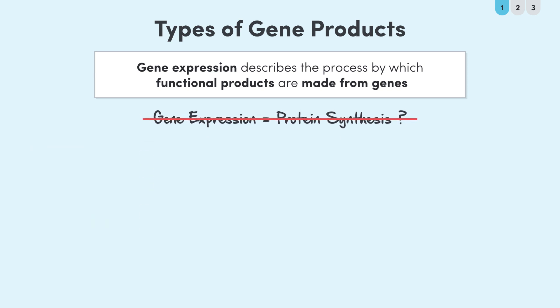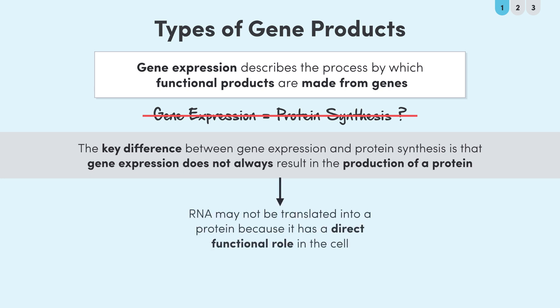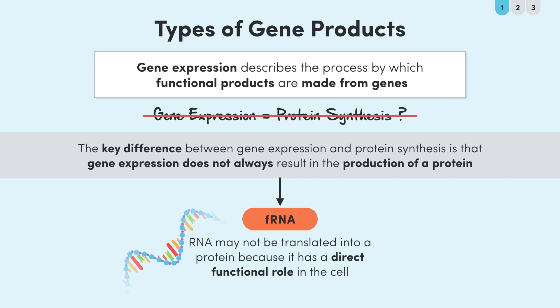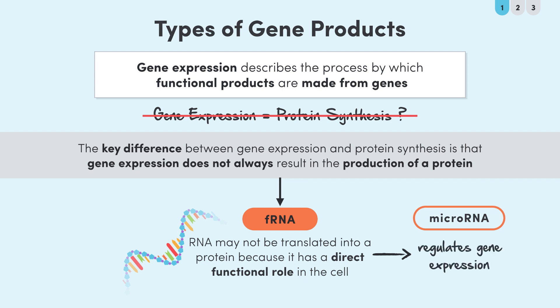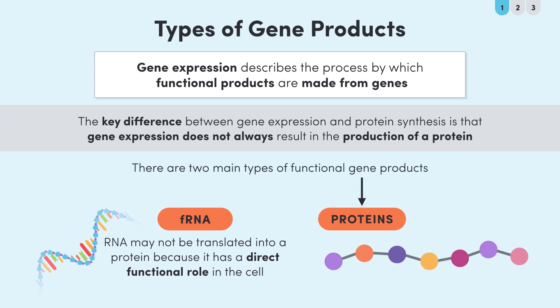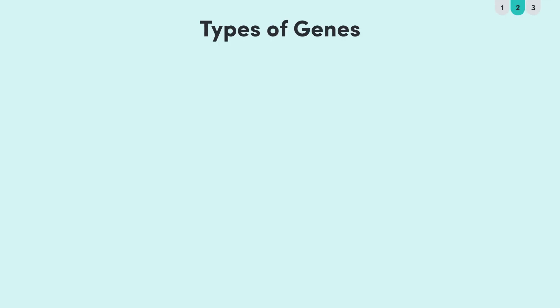There is a key difference between the terms, however. Gene expression does not always result in the production of a protein. Sometimes RNA is not translated because it has a direct functional role in the cell — in this case the RNA is called functional RNA. One example of a functional RNA is micro RNA, which is used to regulate gene expression rather than code for a protein. So there are two main types of functional gene products: protein and RNA.